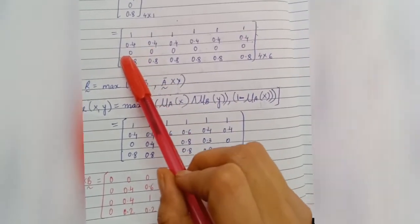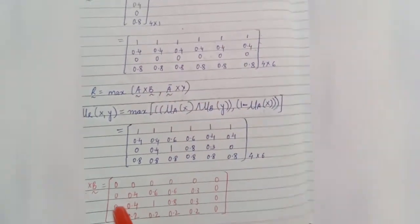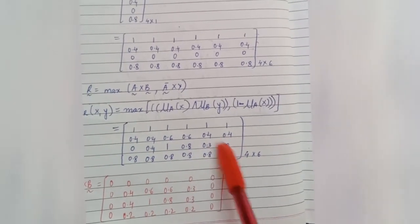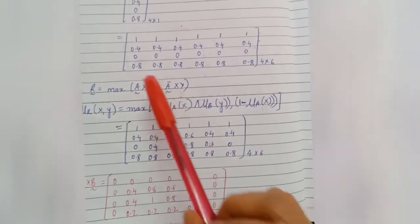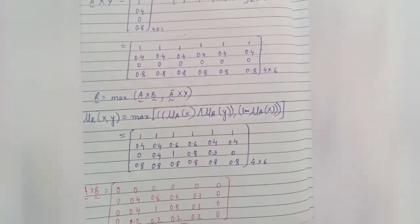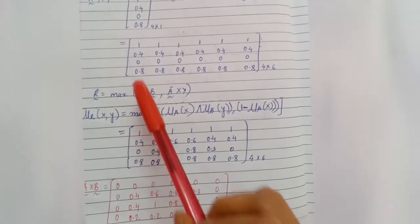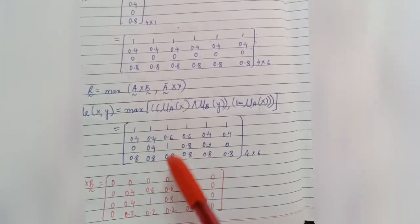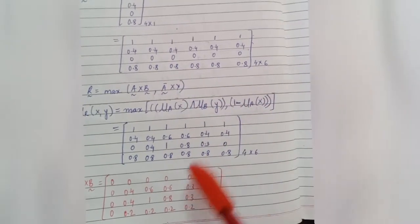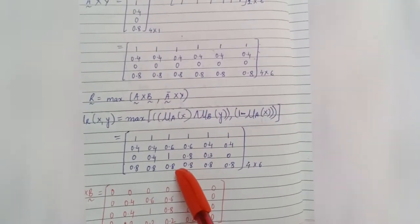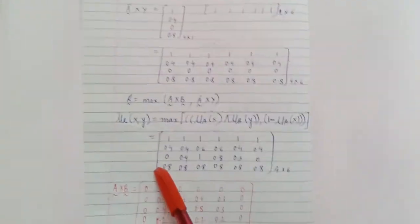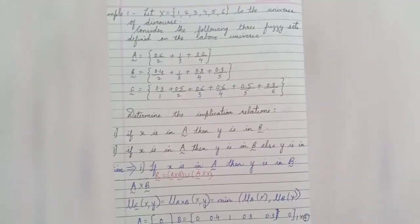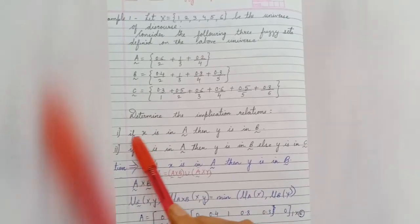For the third row, since A×B row 3 is all zeros, max with A-complement×Y row 3 gives [0, 0.4, 1, 0.8, 0.3, 0]. For the last row: max of [0, 0.2, 0.2, 0.2, 0.2, 0] and [0.8, 0.8, 0.8, 0.8, 0.8, 0.8] = all 0.8. So the final 4×6 relation R for rule 1 (if X is in A then Y is in B) is complete.